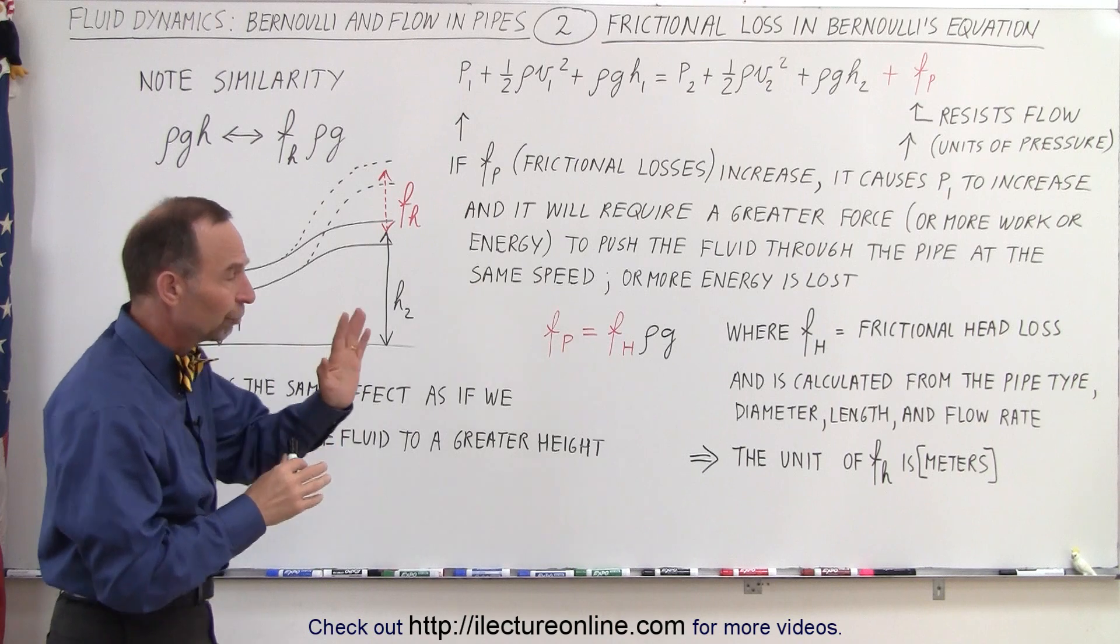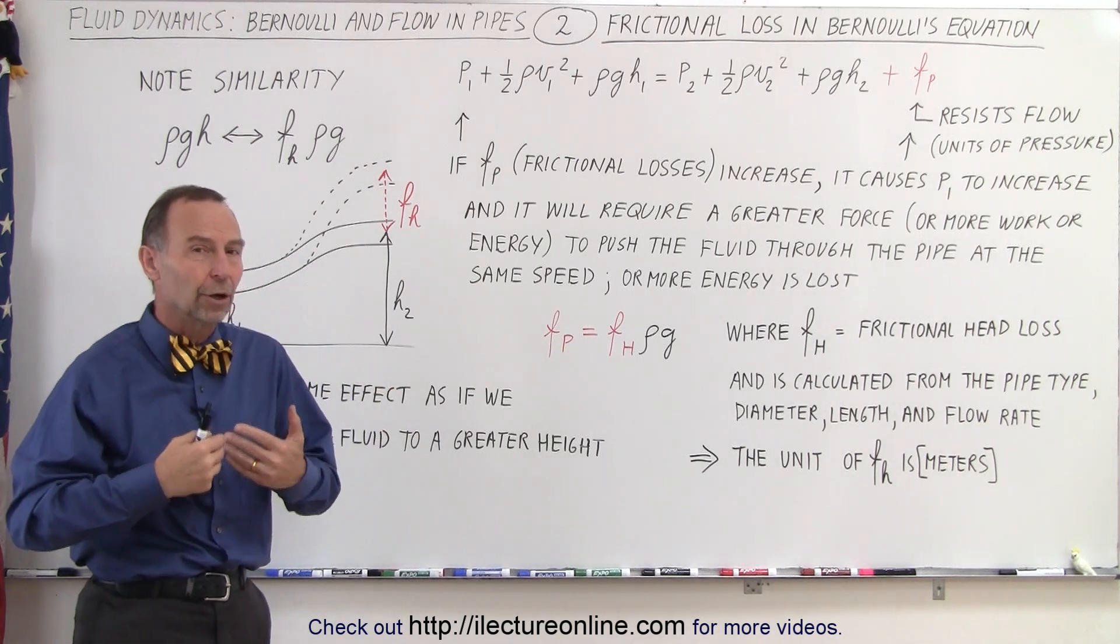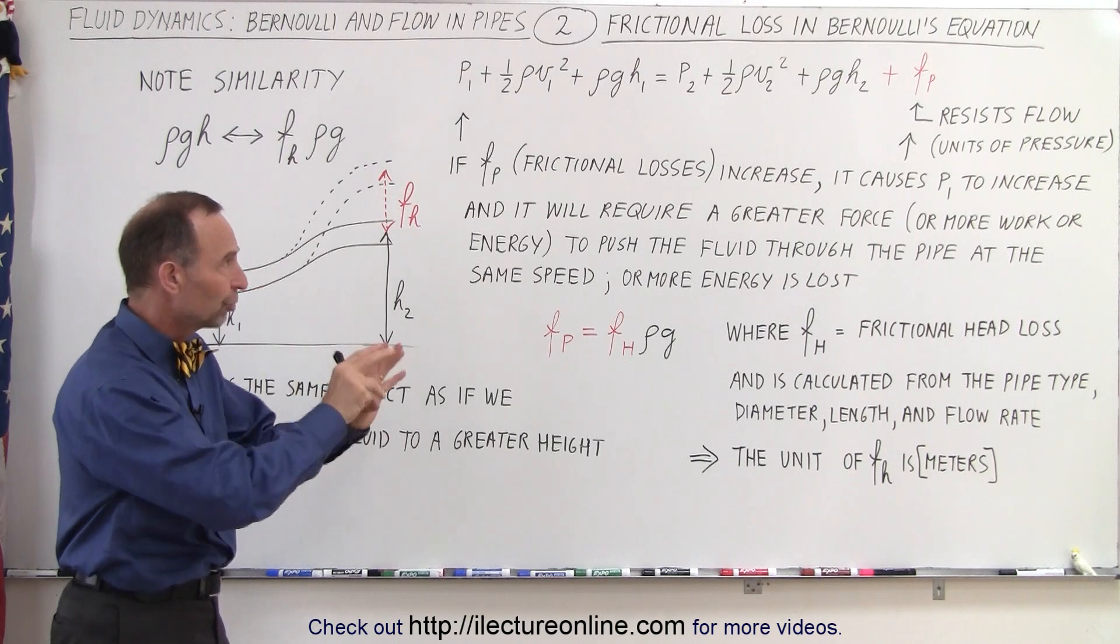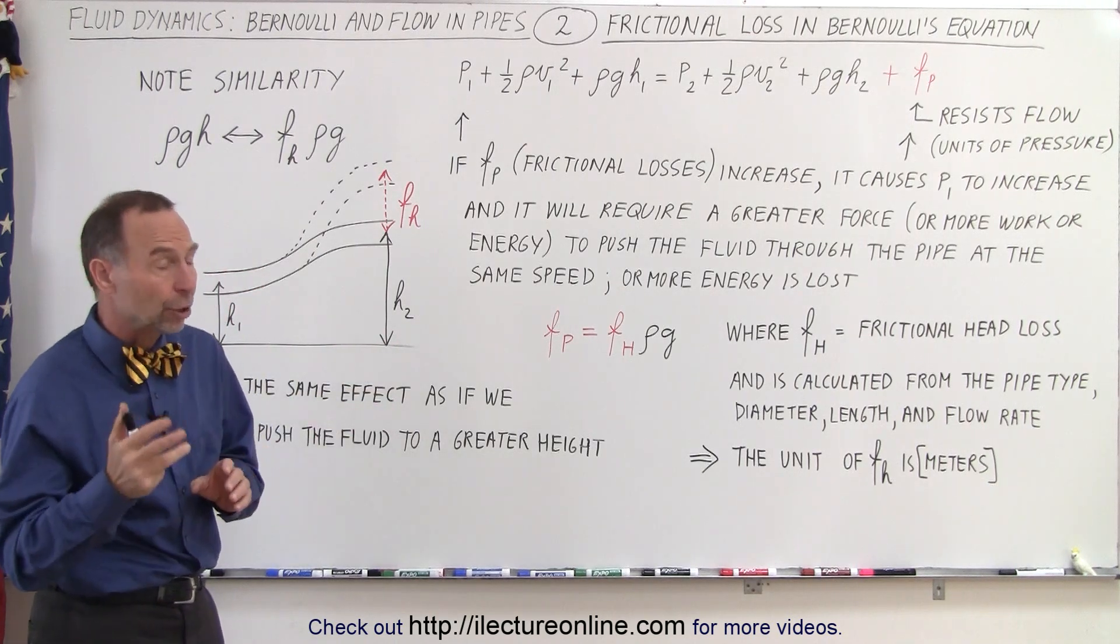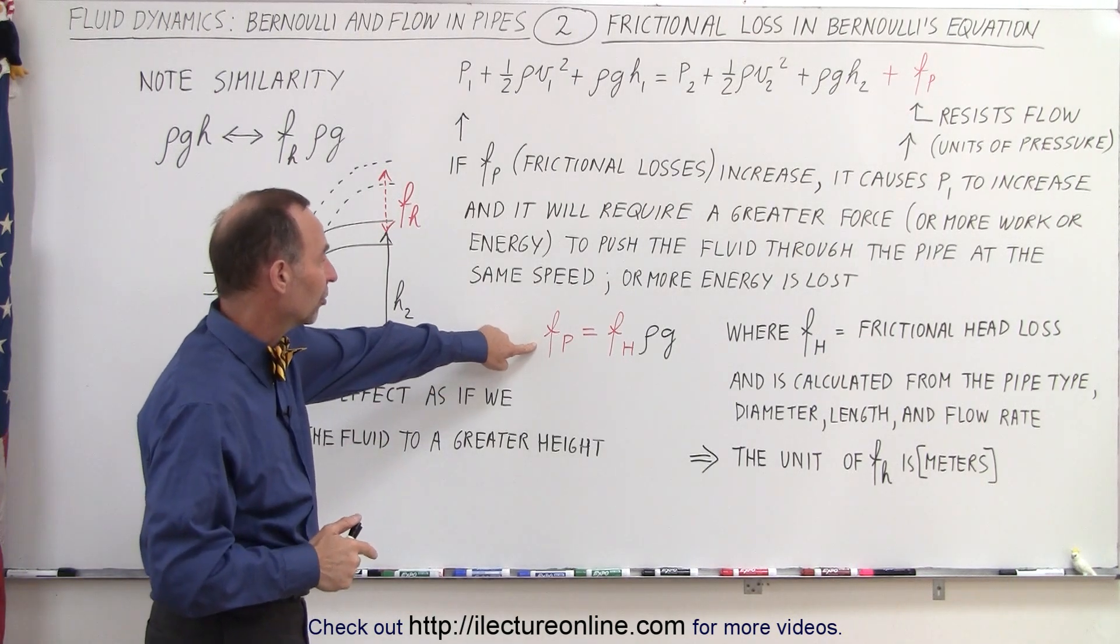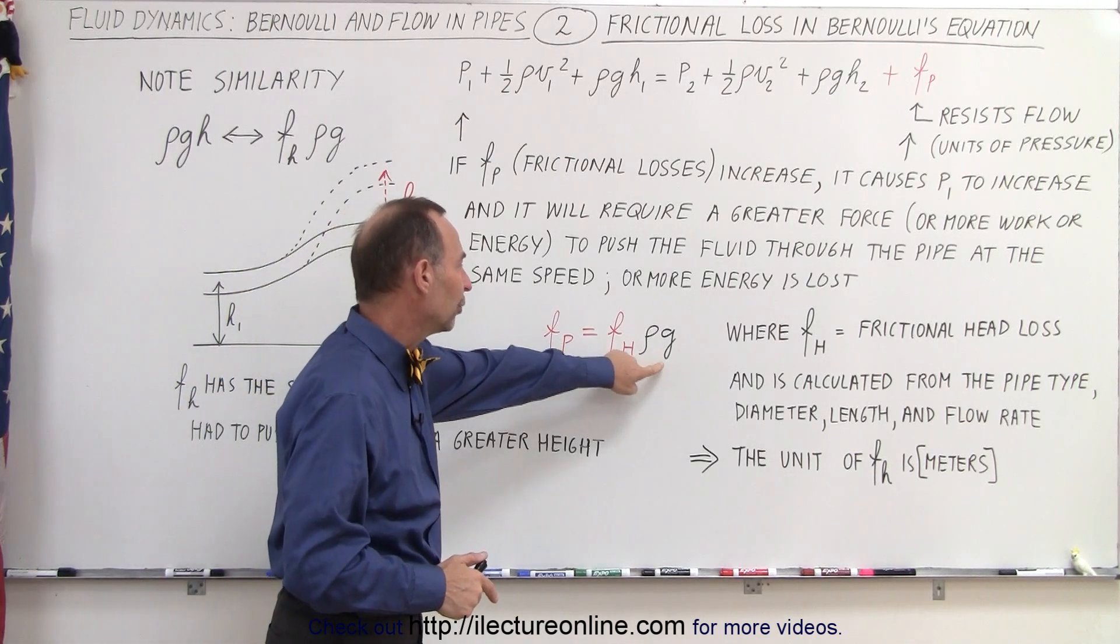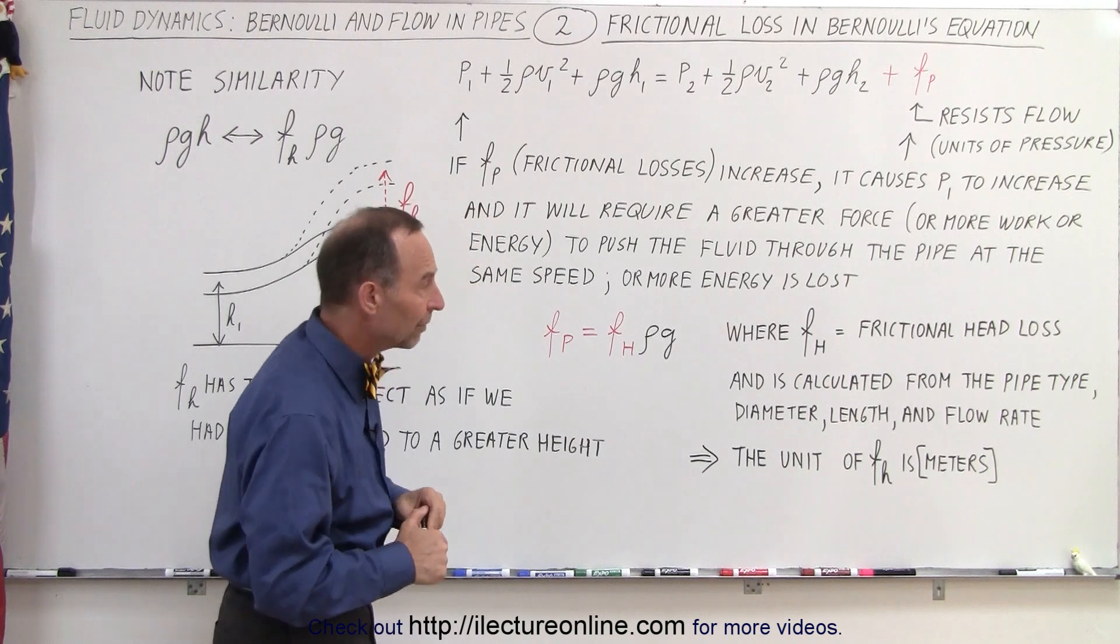Therefore, to push fluid through the pipe requires a greater force, or more work, or more energy. The equation for the frictional losses F sub P is F sub H times the density of the fluid times acceleration due to gravity.